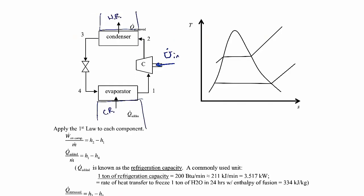In a refrigeration cycle, our goal is to cool down the cold reservoir — we want to get a lot of heat added from our cold reservoir into the evaporator. We're trying to cool down this region, like our refrigerated space, like the interior of your home refrigerator. The temperature of the working fluid in the evaporator has to be colder than the refrigerated space so that we get heat transfer going into the working fluid. So the temperature in the evaporator has to be less than the cold reservoir temperature.